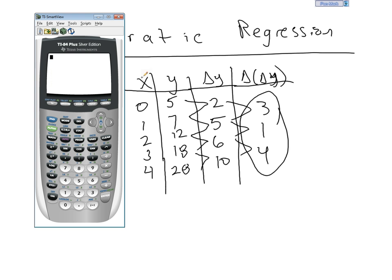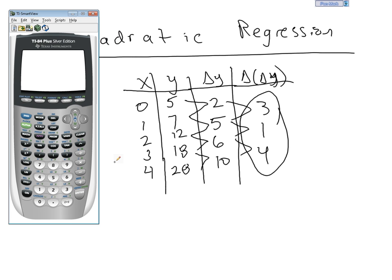Press second, mode, to exit out of there and go back to our home screen. Now, we're ready to do quadratic regression.